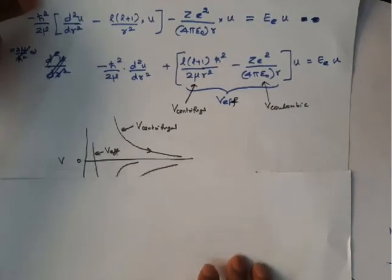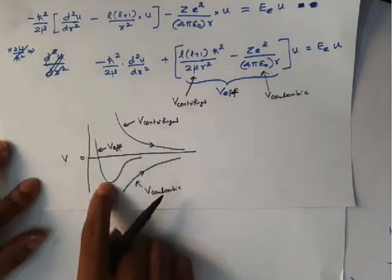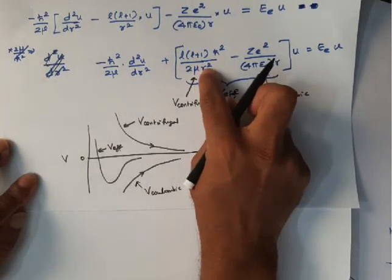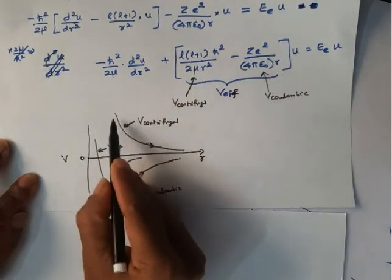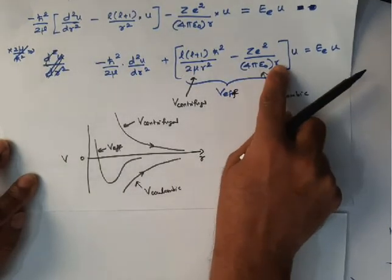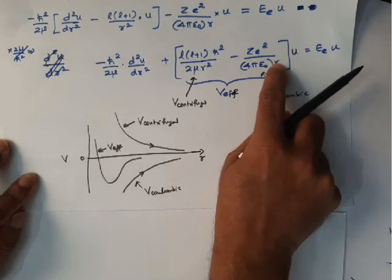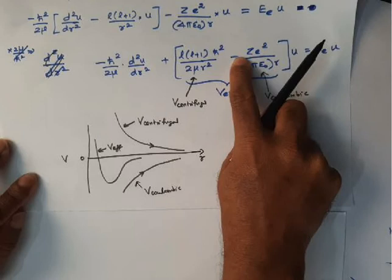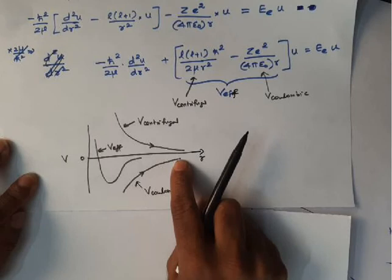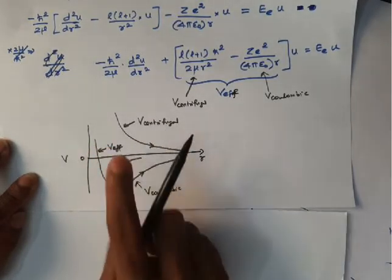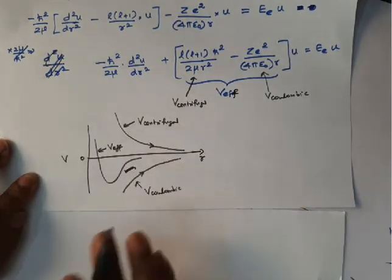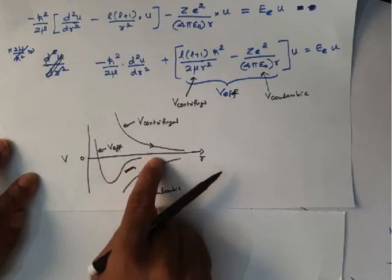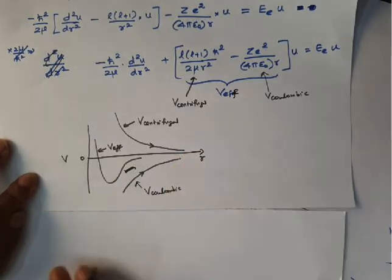If we plot potential energy on the y-axis and r on the x-axis: the centrifugal term decreases as r increases (r in denominator), and the Coulombic term — though also with r in the denominator — has a negative sign, so it effectively increases (becomes less negative) as r increases. The sum of these two gives the effective potential, which decreases to a minimum, then increases back toward zero as r approaches infinity.